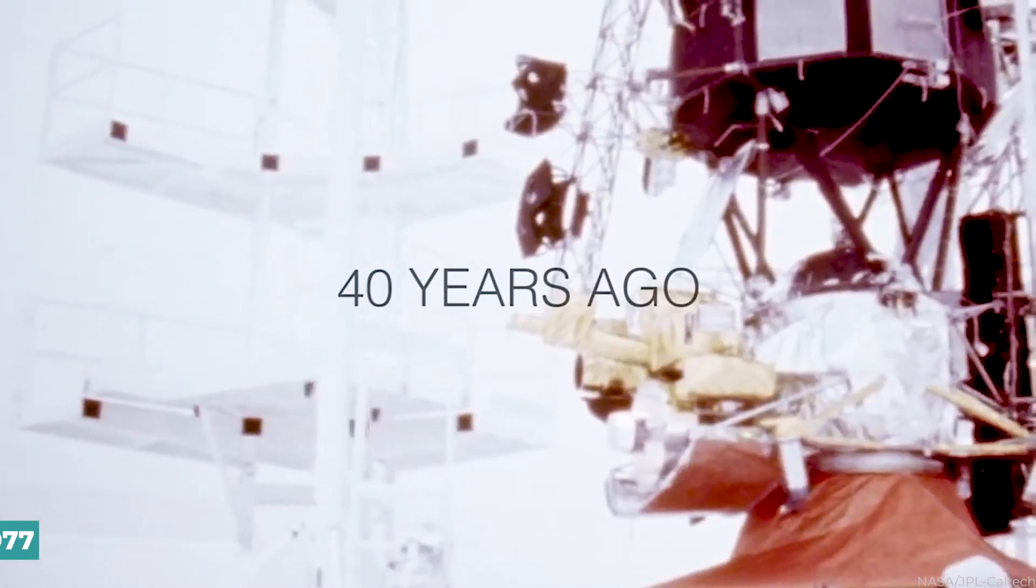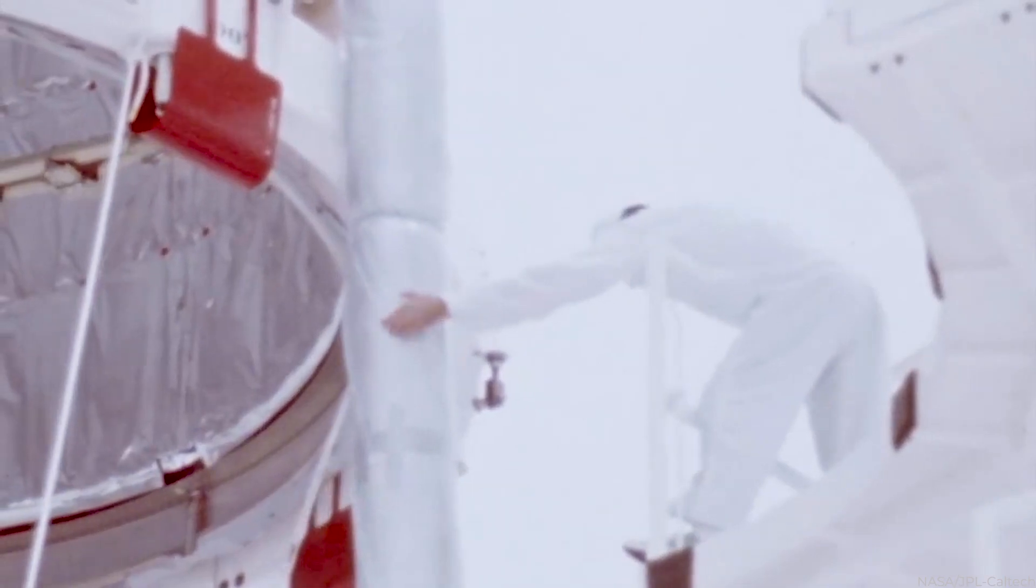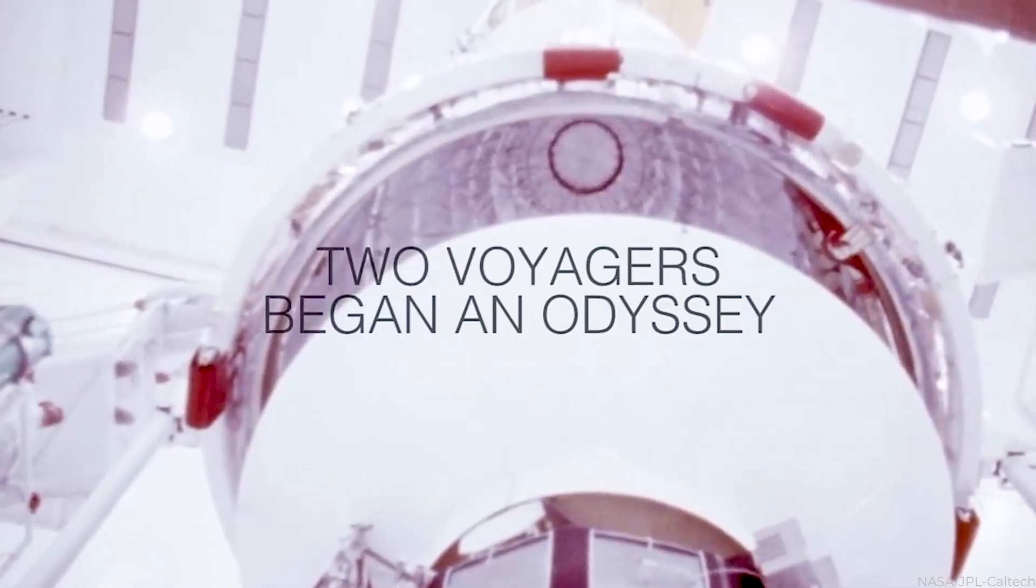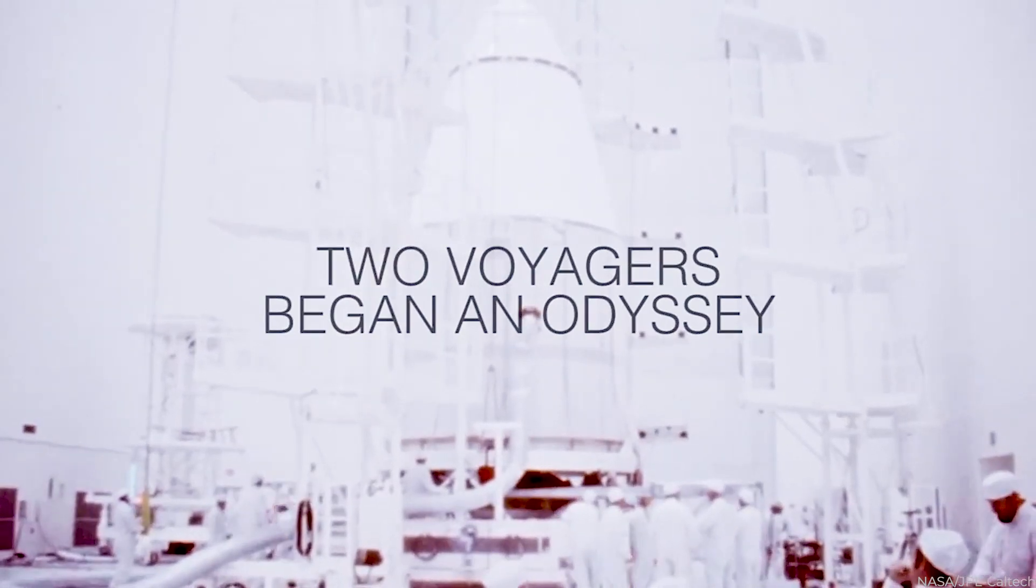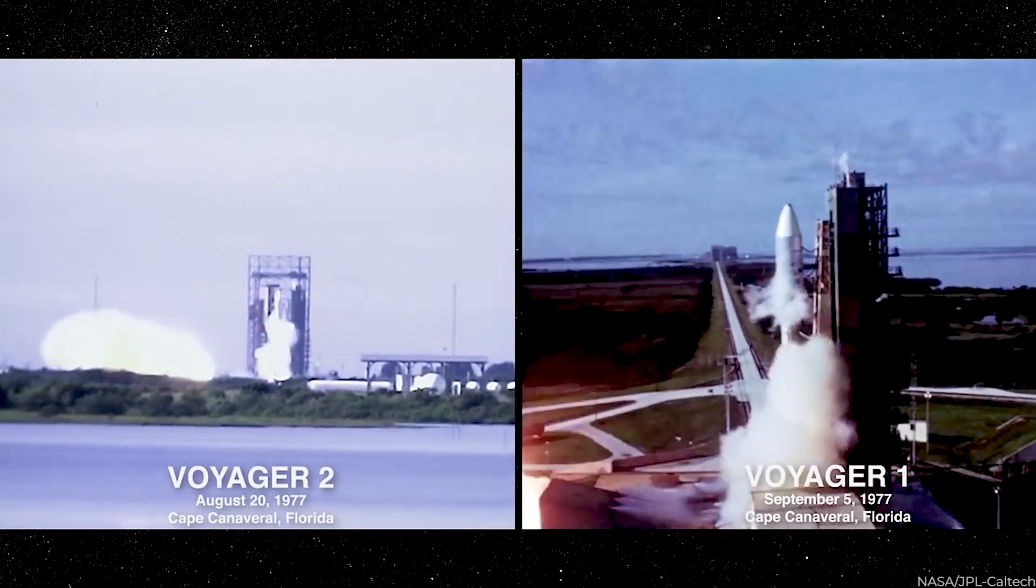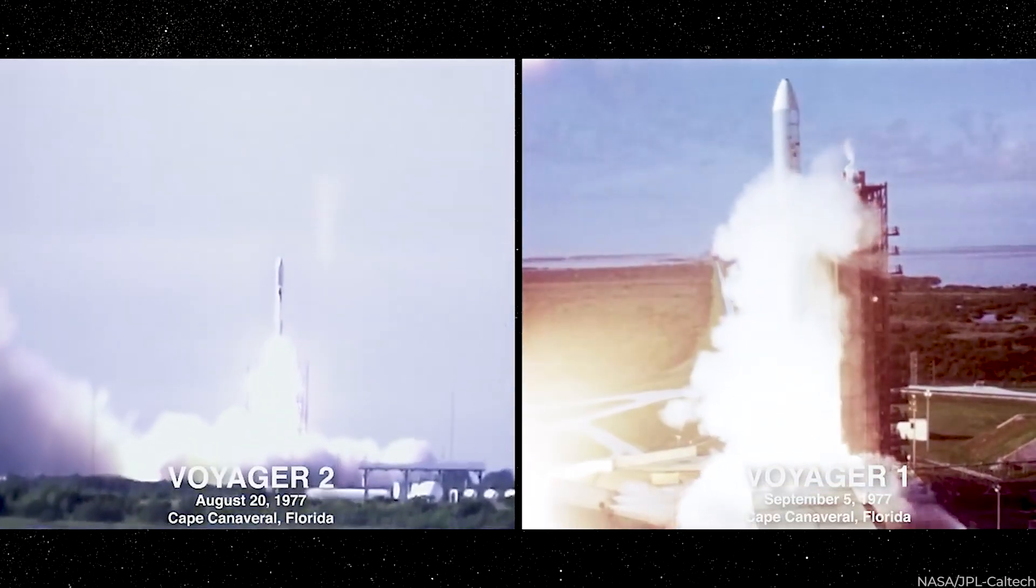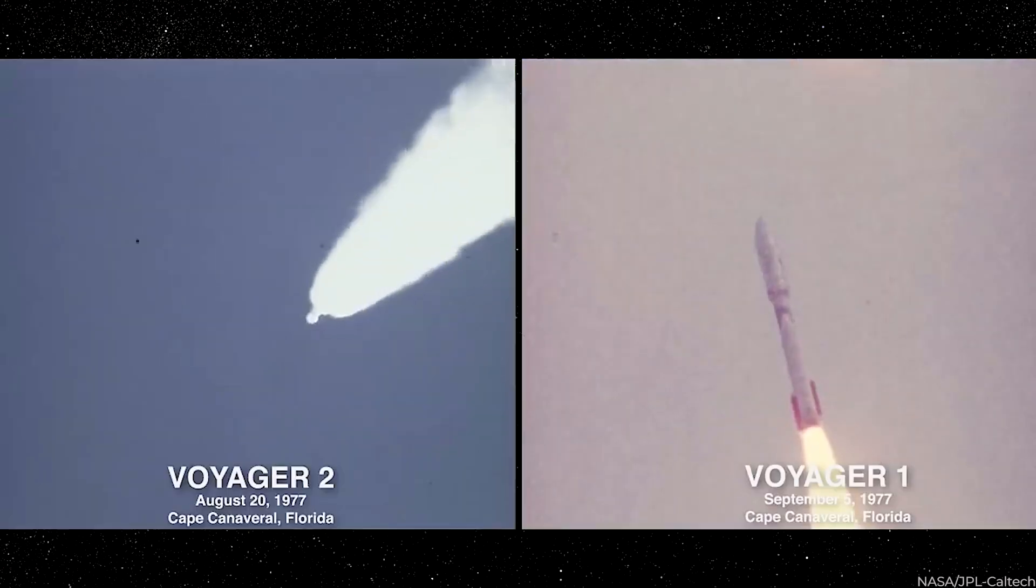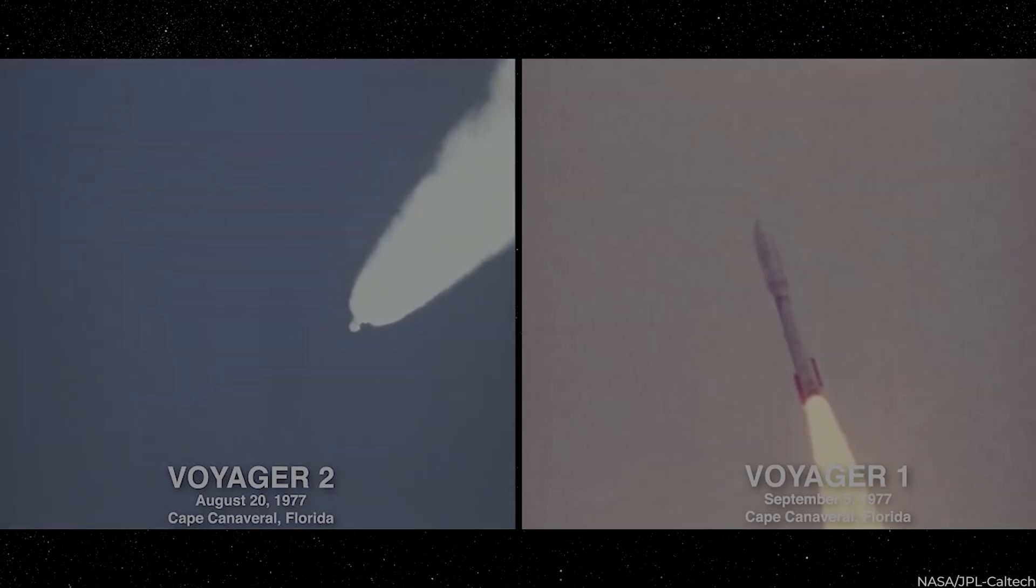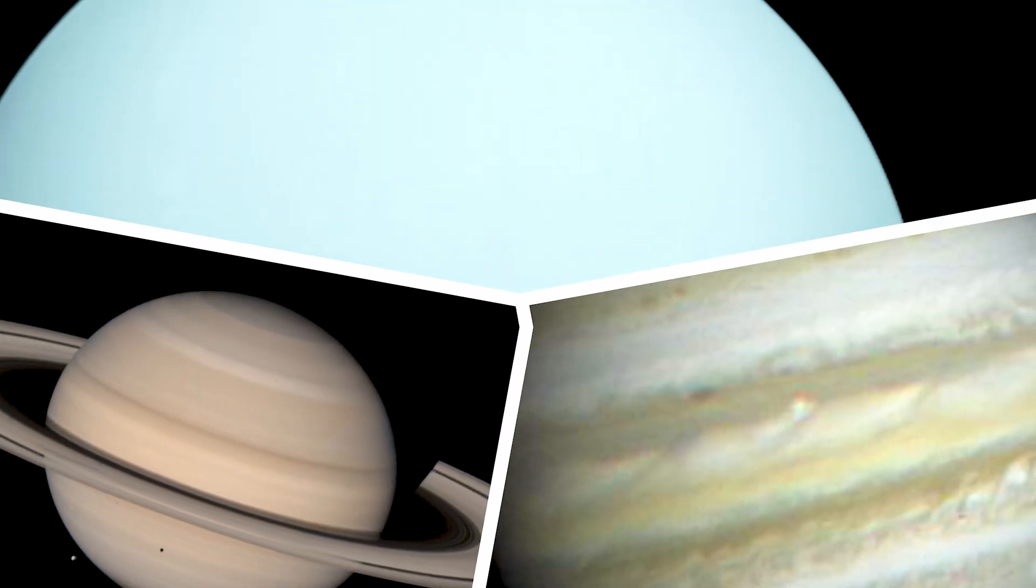NASA began the Voyager program in 1977 to explore our solar system's outer planets. The Voyager 1 and 2 spacecraft embarked on their epic voyage, acquiring magnificent photographs and gathering crucial information about Jupiter, Saturn, Uranus and Neptune.